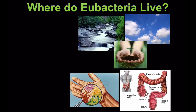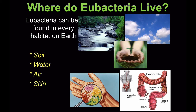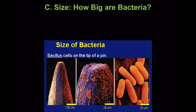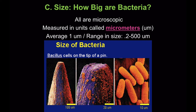Eubacteria are found in every habitat on earth — soil, water, air, skin, even in the colon. So how big are bacteria? All are microscopic. They're measured in units called micrometers, and they can range from 0.2 to 500 micrometers.